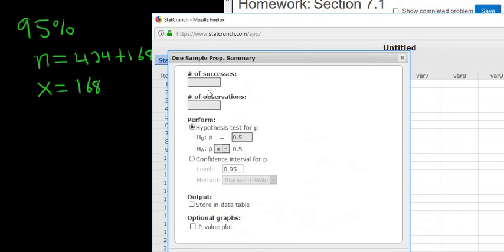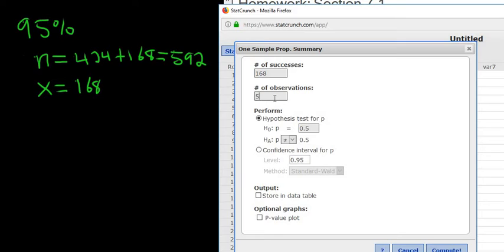So successes, that's the x. They have to give you that in the problem somehow. And then n is the total, so 592. It says hypothesis test for p, that's something we'll do later, so just click confidence interval. In this case, it's already at 95, so we don't have to change it.